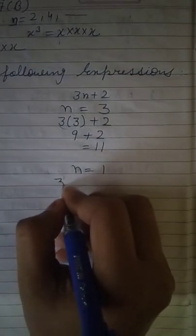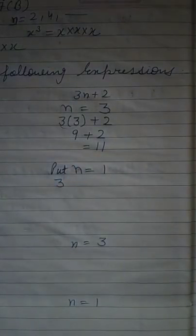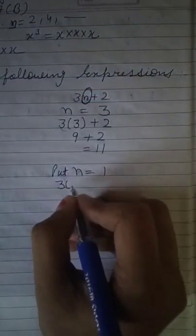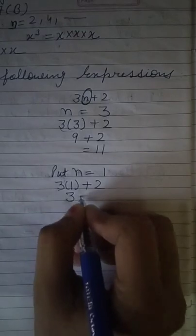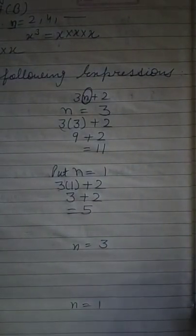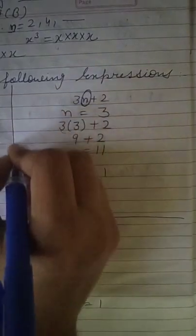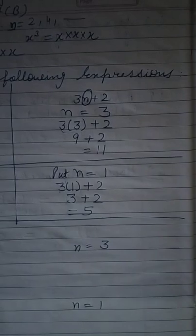After that, you have to put 1. You replace this n with 1. 3 multiply 1 is 3, plus 2 is 5. The meaning is that whatever value of your variable n is given, you have to solve it with the given value. You solve it in your algebraic expression.